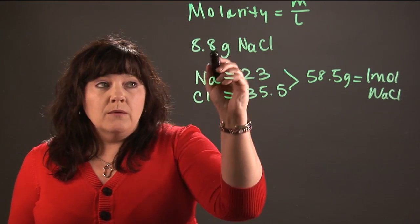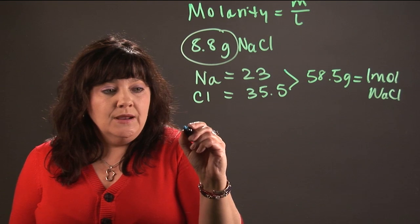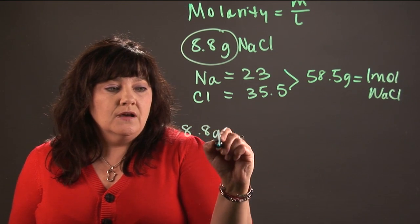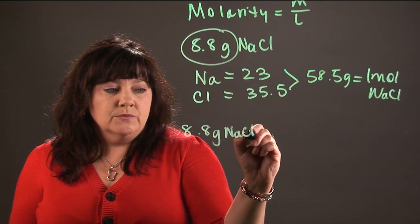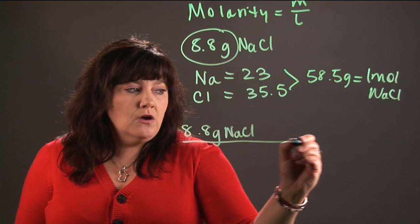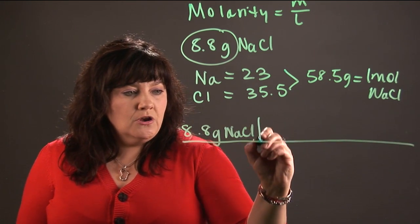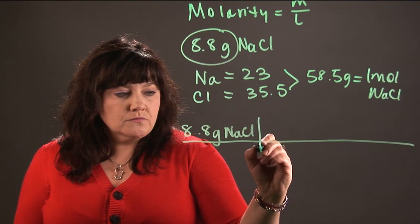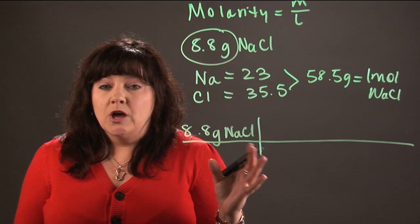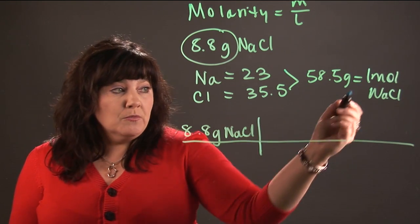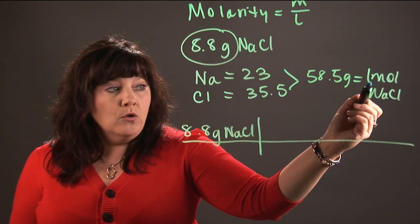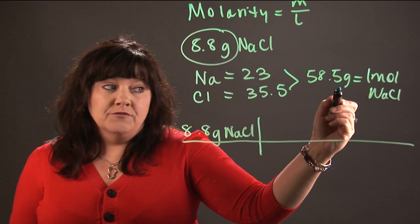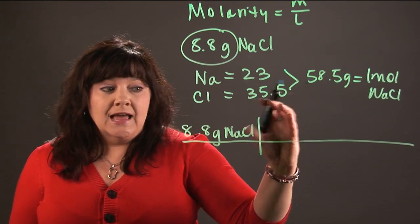Now when we do a problem like that, we always start with what we're given. So we're given 8.8 grams of salt, so I'm going to set that up there first. Then I'm going to draw a nice long line and a line down this way. Now I need to come up with what we call a conversion factor. So remember, I just figured out that one mole of salt weighs 58.5 grams, and I'm going to use this as my conversion.